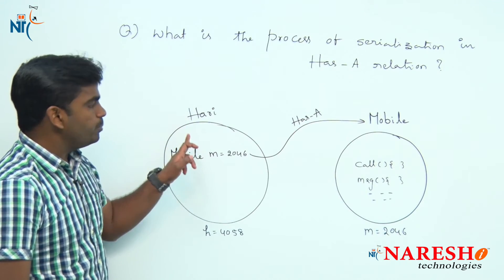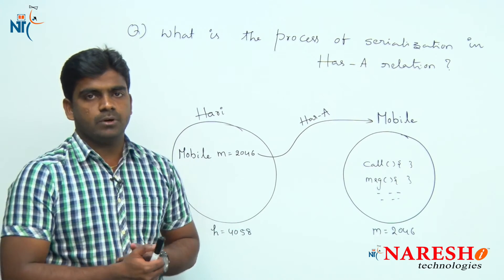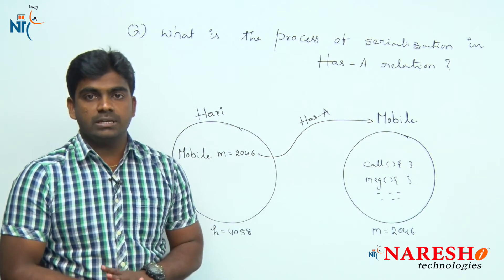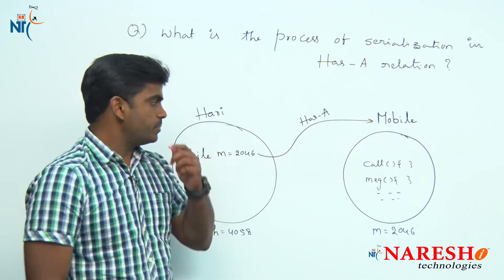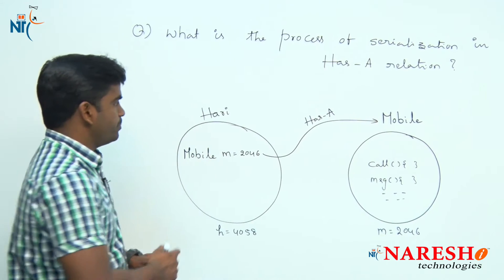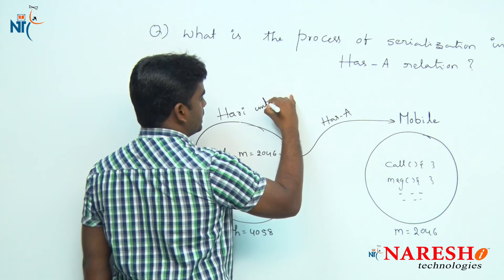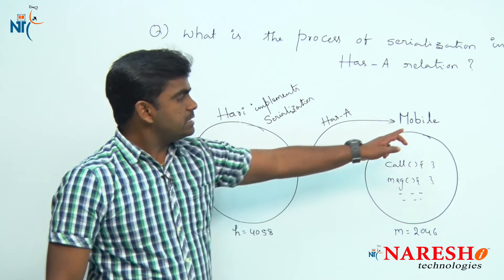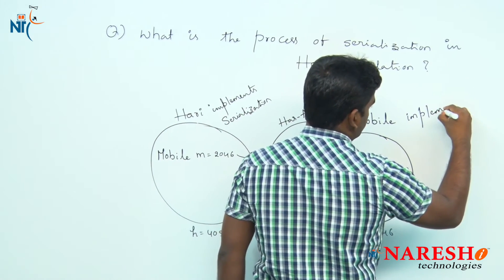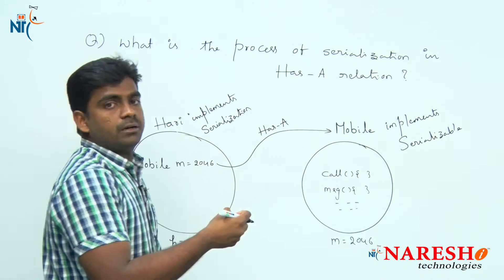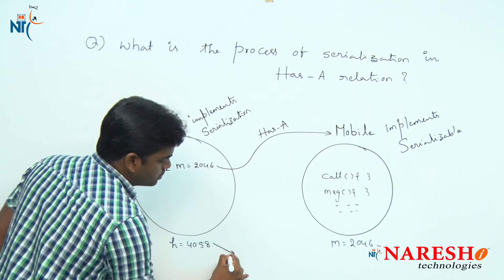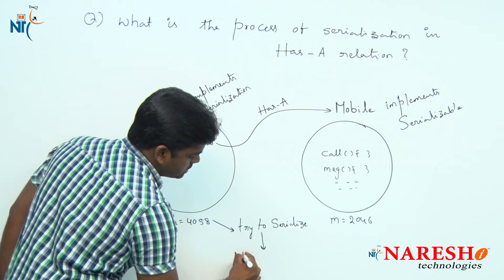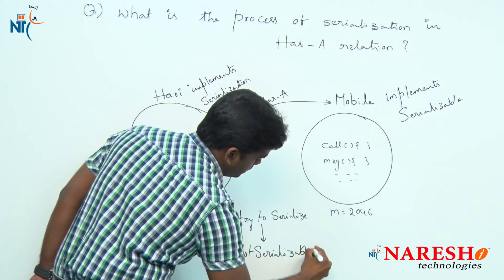Now Harry can access the complete functionality of mobile. The concept here is: what is the process of serialization in a has-a relation? Suppose you want to serialize this object — the Harry class should implement the Serializable interface. But imagine mobile is not implementing Serializable interface. Whenever we try to serialize the Harry object, you will get an exception — NotSerializableException.